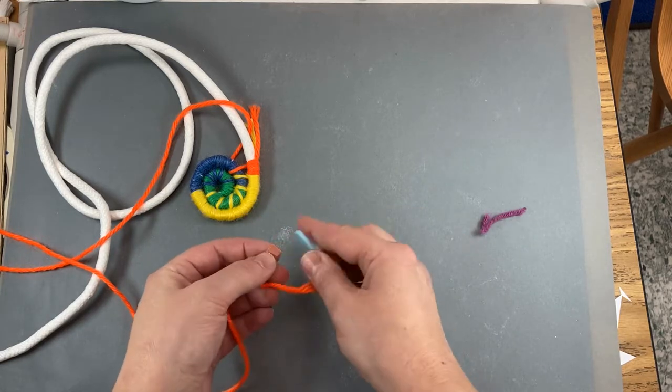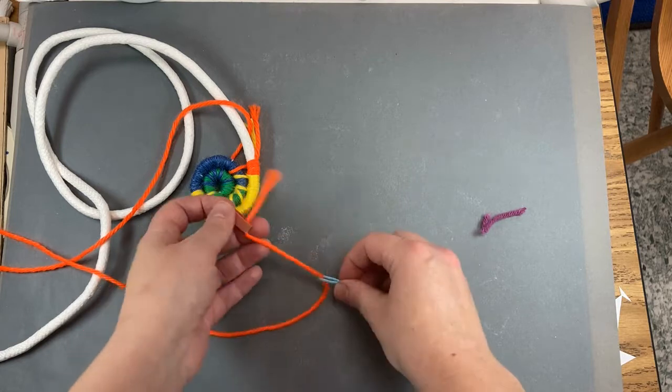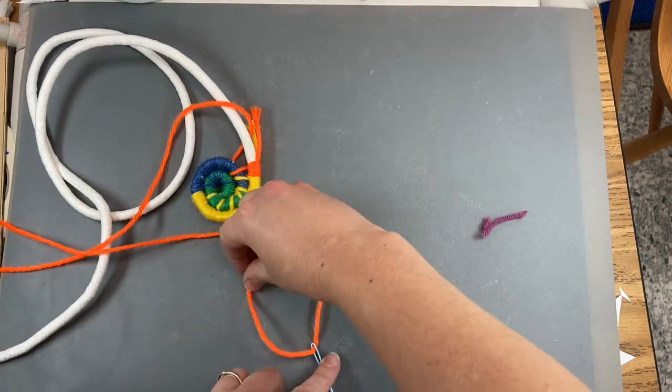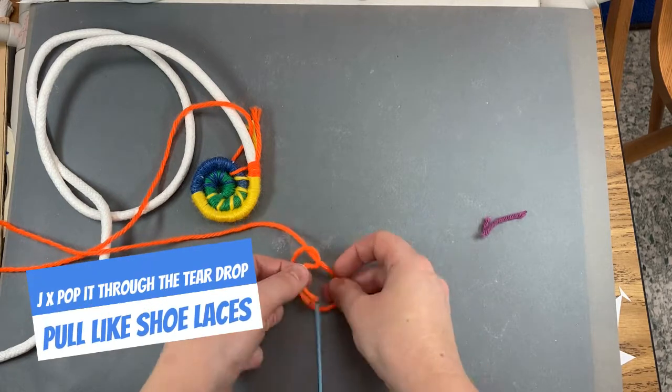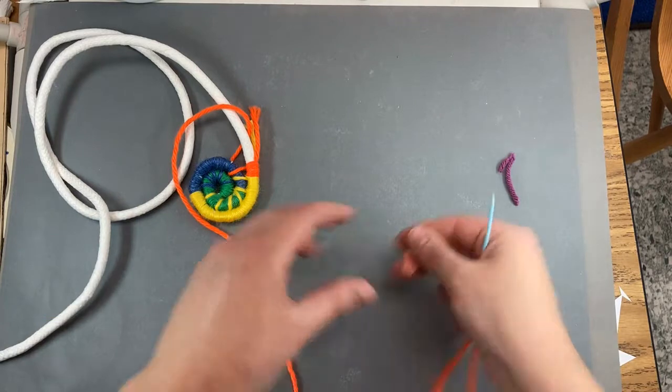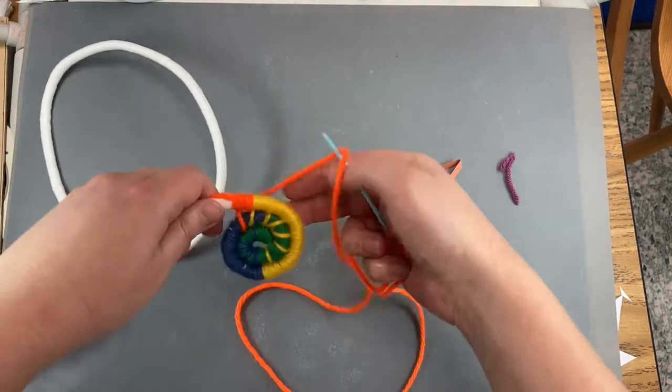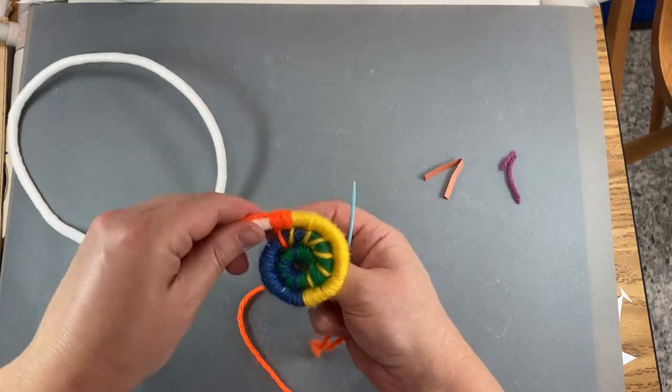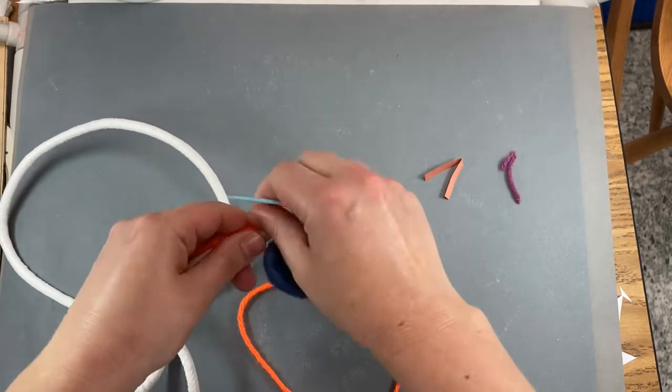So thread the needle, pop it through the teardrop, pull like shoelaces, and then hold the little tails in your hand and the coil.